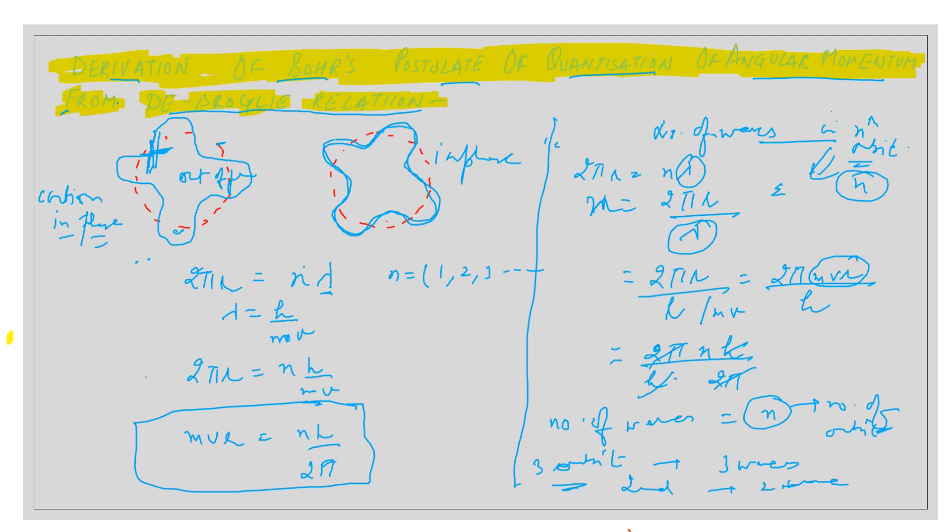This de Broglie relation is not applicable in daily life. Why we do not consider that we are having particle as well as wave nature? Because λ = h/mv, so λ is inversely proportional to mass. For microscopic particles, mass is very less, so wavelength associated with them will be large. We cannot ignore the wave nature of microscopic particles.